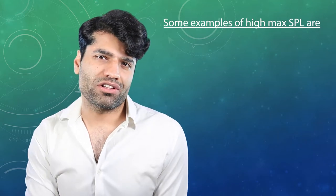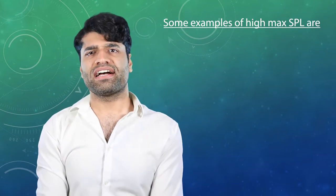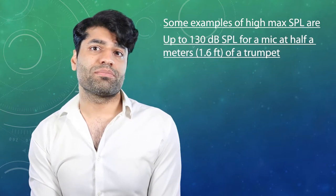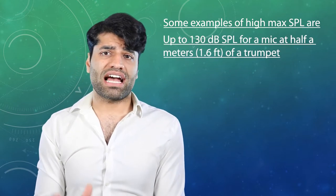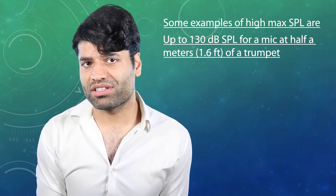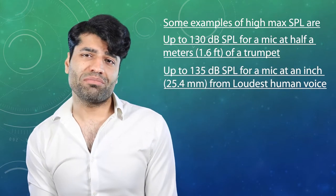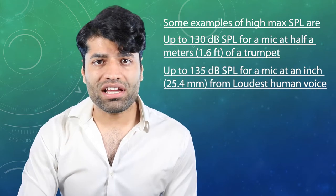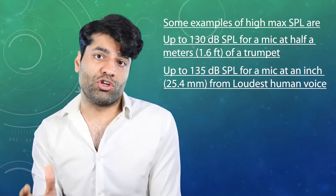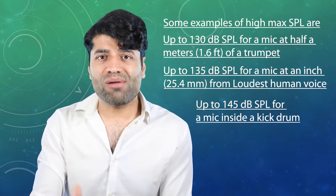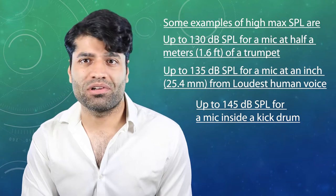Some examples of high Max SPL are up to 130 dB SPL for a mic at half a meter from a trumpet, up to 135 dB SPL for a mic at an inch from the loudest human voice, and up to 145 dB SPL for a mic inside a kick drum.